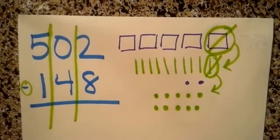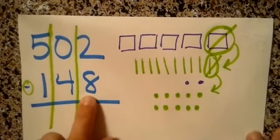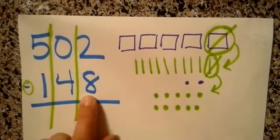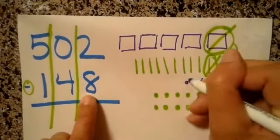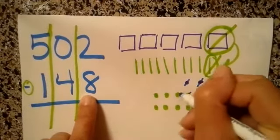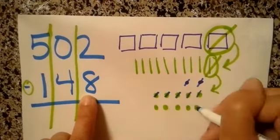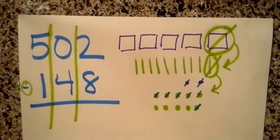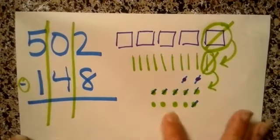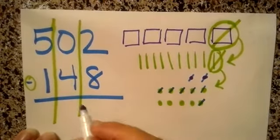And now we're just going to start crossing out. We got lots to cross out. So how many ones are we crossing out? Yep. Eight. So one, two, three, four, five, six, seven, eight. How many do I have left? Yeah. Only got four left.